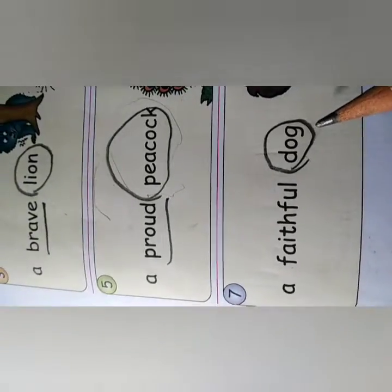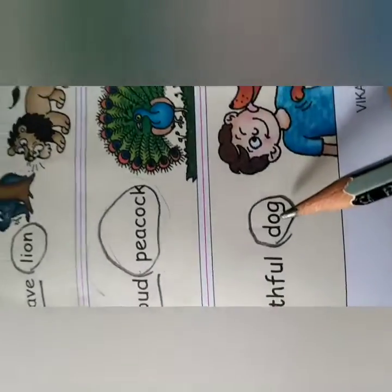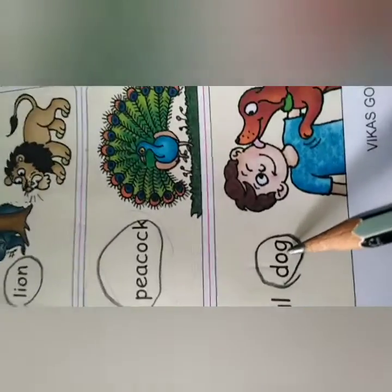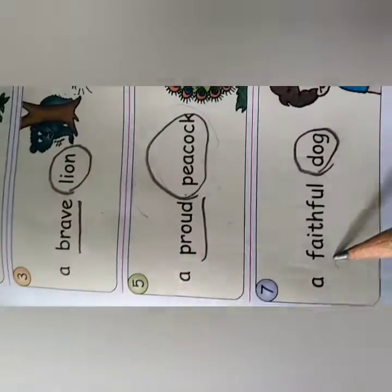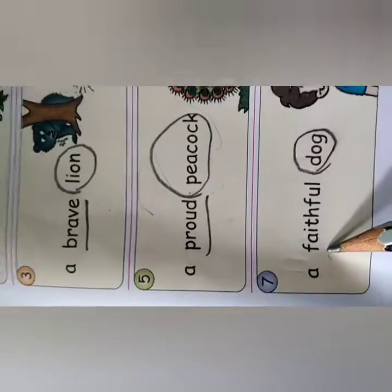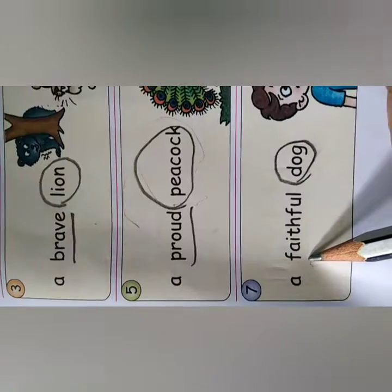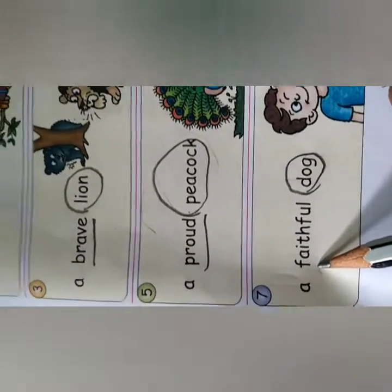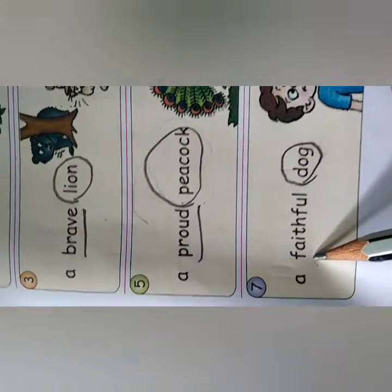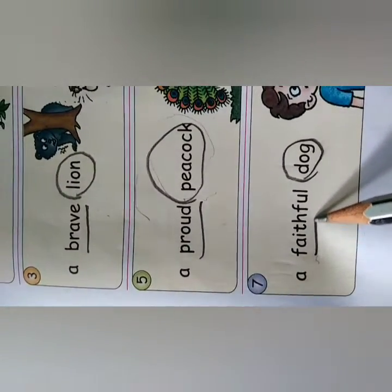A faithful dog. We are talking about dog, so the naming word is dog. How is the dog? Who is giving us information about the dog? 'Faithful' is describing it. So we will underline 'faithful'.